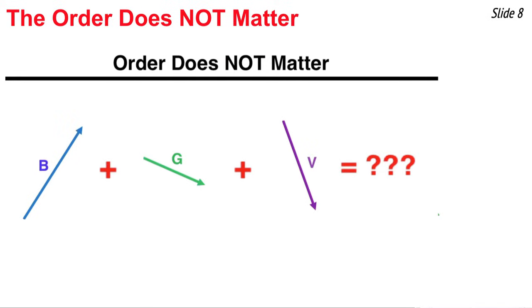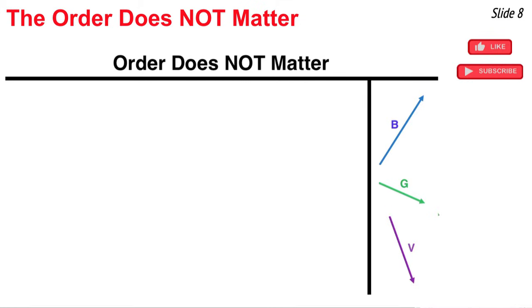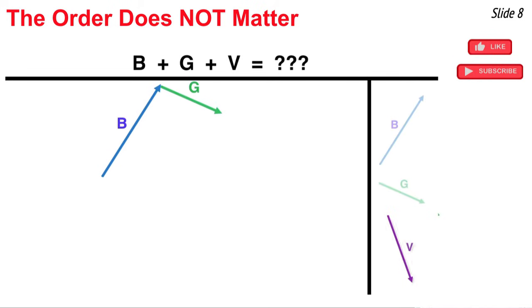In this animation, we're going to ask the question, does the order in which we add three vectors affect the resultant? We have vectors b, g, and v, and we're going to first add them in that order, beginning with vector b. And then, once we draw vector b, we'll add vector g to it in head-to-tail fashion. And then, finally, vector v. And here's the resultant.